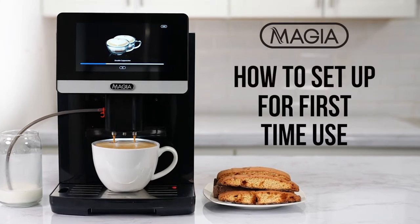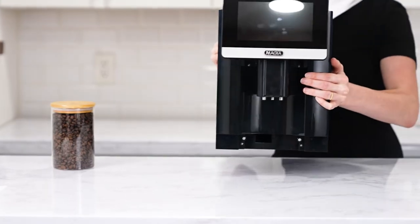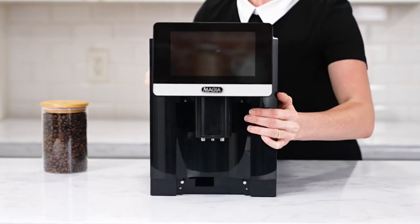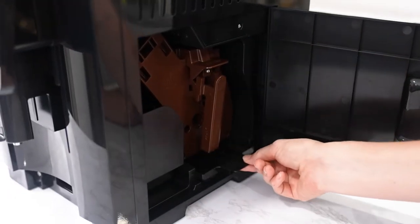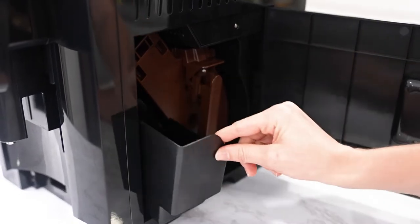How to set up your Mahia coffee machine for first time use. Remove the coffee machine from the box and place it on a flat surface. Ensure the brewery unit, dust pan, and waste basket are in place.